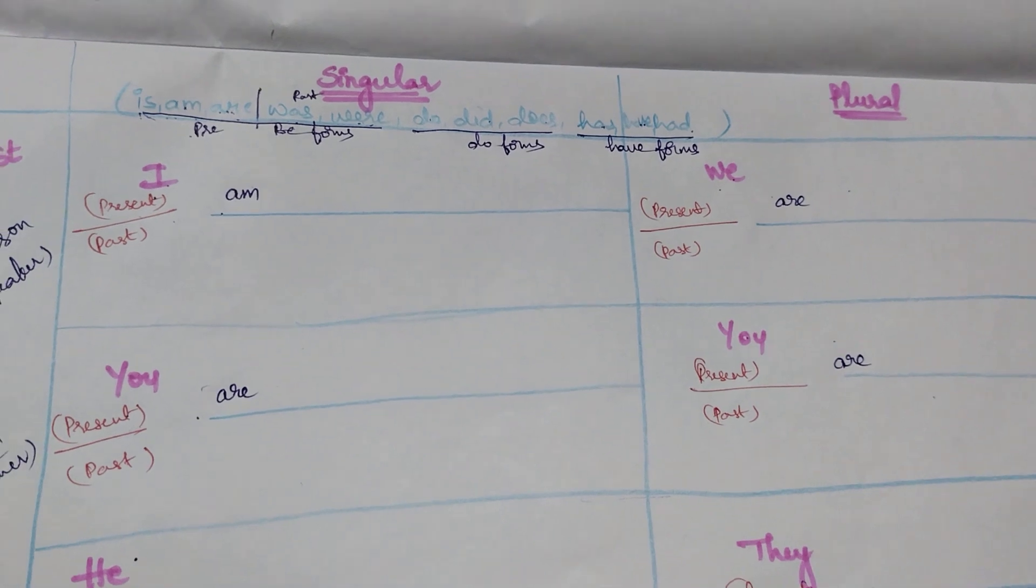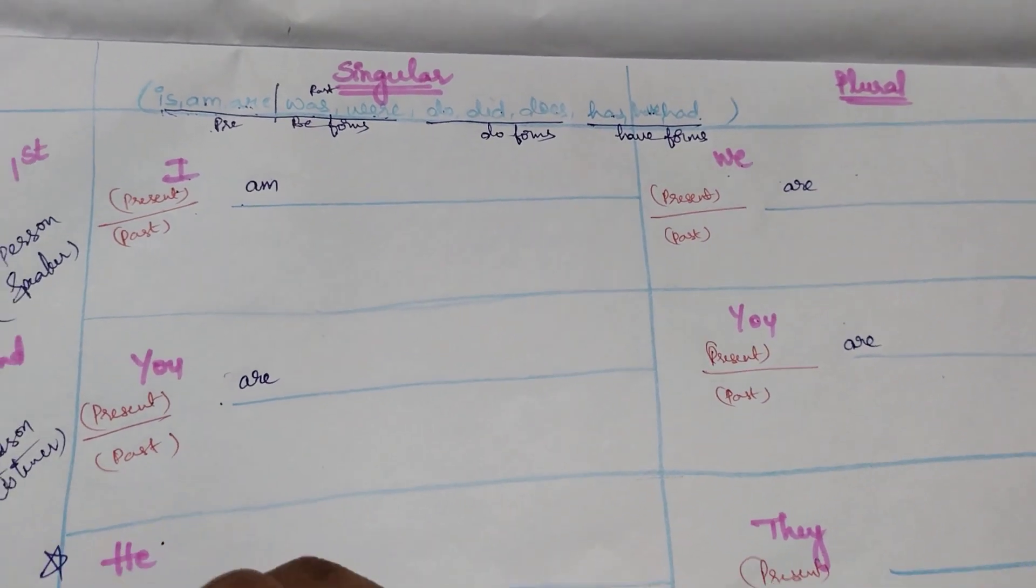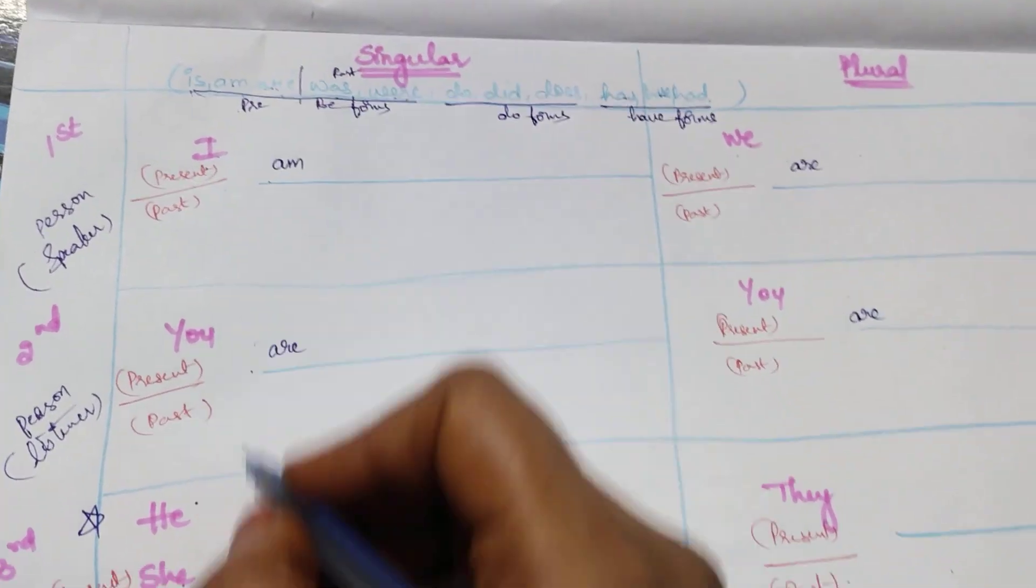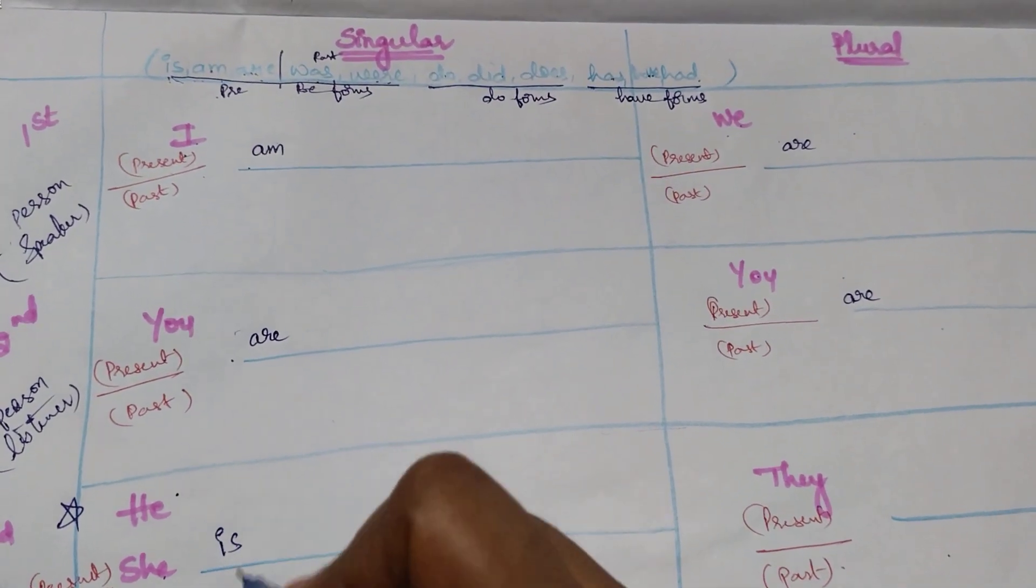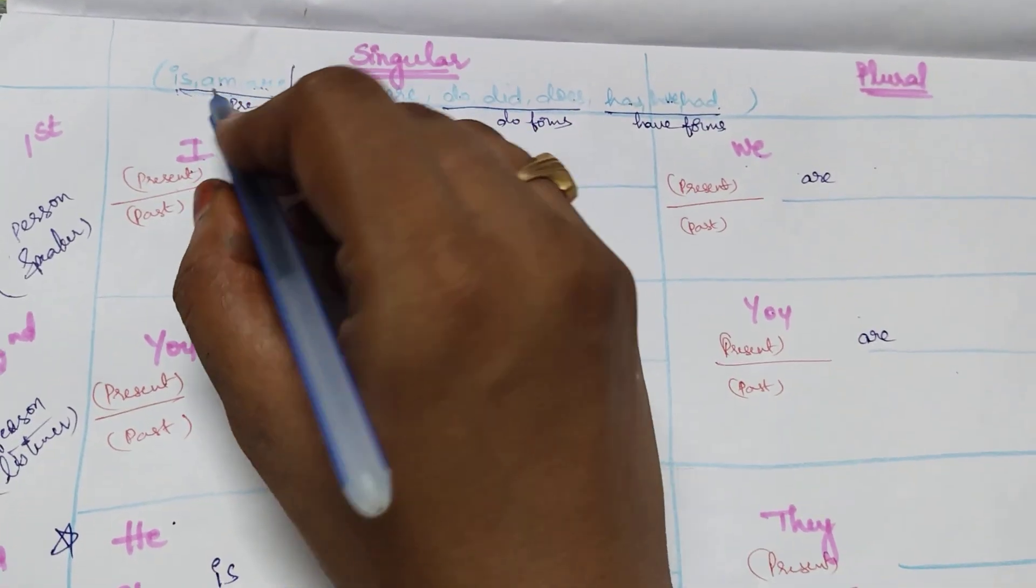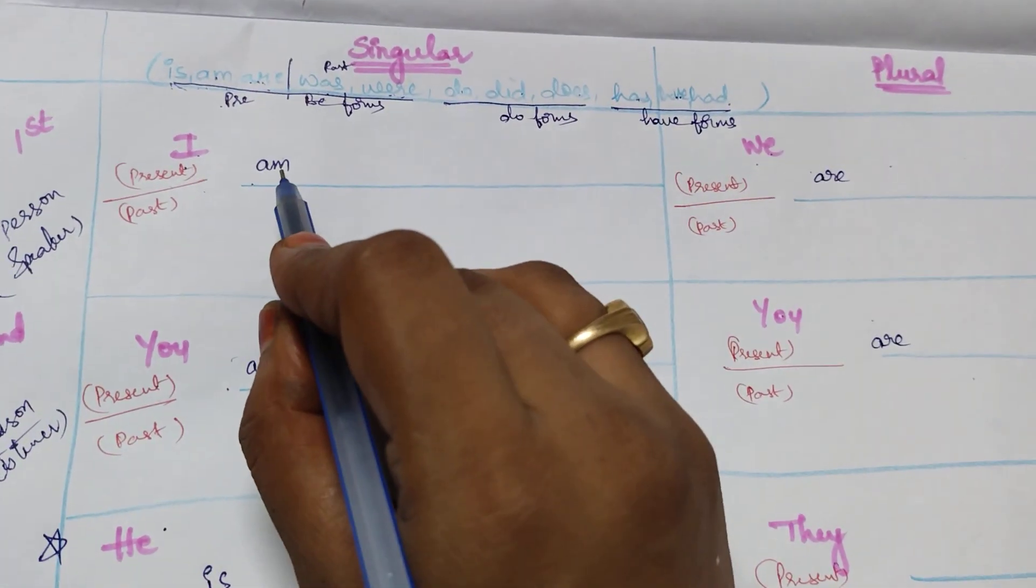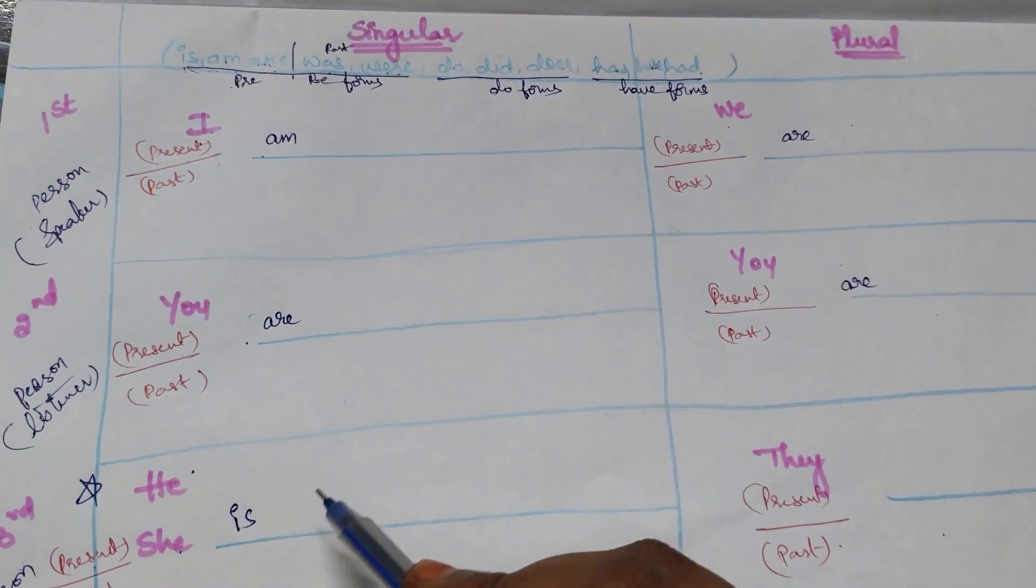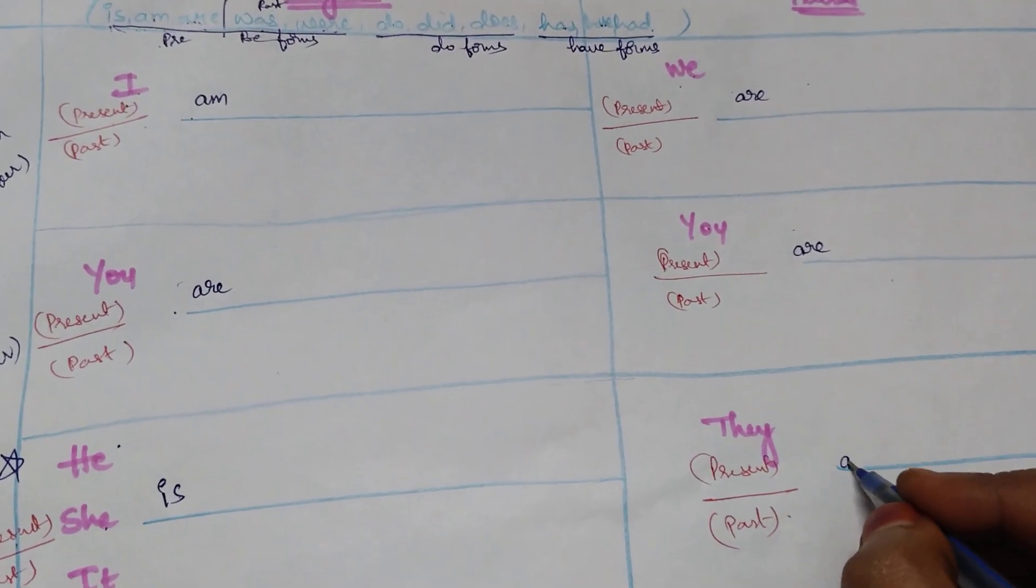Now he, she, it - put a star here. Okay? So third person singular will always be special. For he, she, it, we have to pick is when it is in present. Now this section is over. So in present, only for I am, he, she, it is, remaining are. All are.